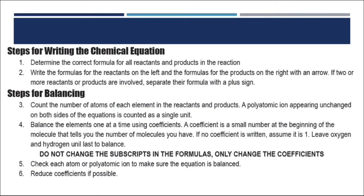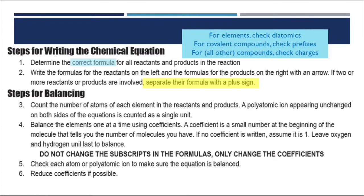The next thing on your page is the steps for writing chemical equations and then balancing them. I'm going to highlight a couple of key points and I'd encourage you to highlight them too, because with all these words it can seem complicated. But really, when writing a chemical equation, the focus is on having the correct formulas for all substances named and separating those formulas with plus signs.